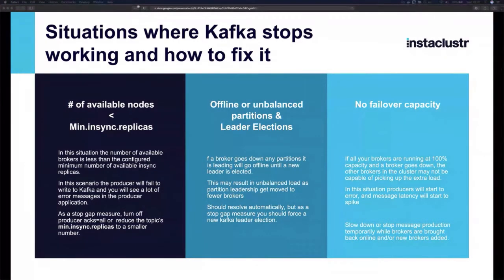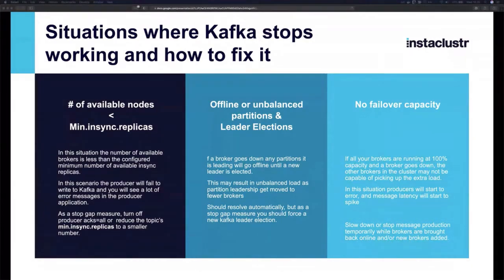To address this, you can reduce the strictness of your guarantees temporarily — lowering the minimum in-sync replicas to a smaller subset of your cluster. Alternatively, you can reduce producer acknowledgement requirements to accept confirmation from just one broker, or even send messages with no acknowledgement at all — not ideal long-term, but workable as a stopgap.